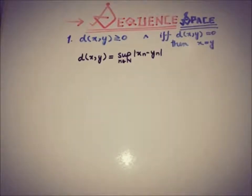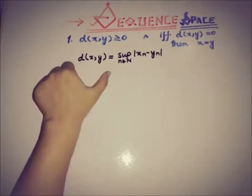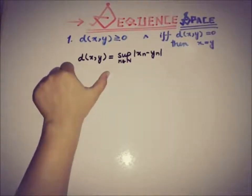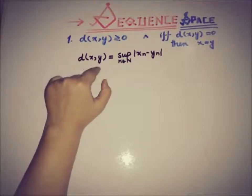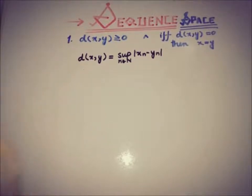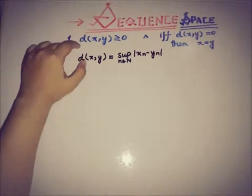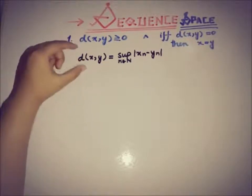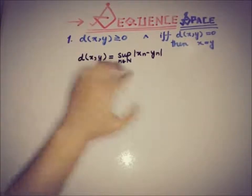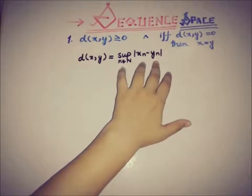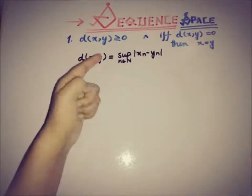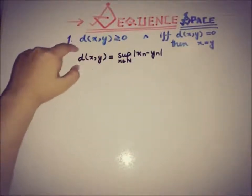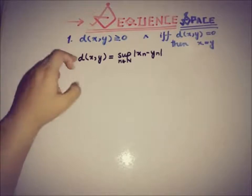We have to check that this function must be greater than or equal to zero, and if it is equal to zero, then x and y must be the same. This property is obvious because the way the function is defined — the supremum of the absolute values — that absolute value cannot be smaller than zero. So this is proved by the definition of the function.